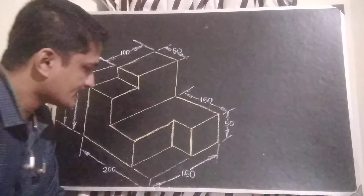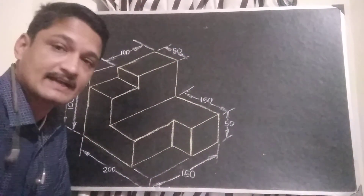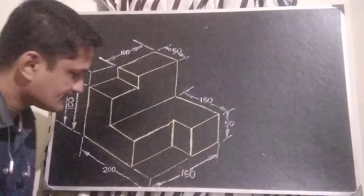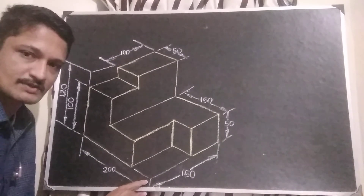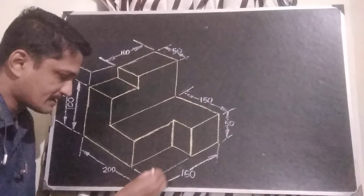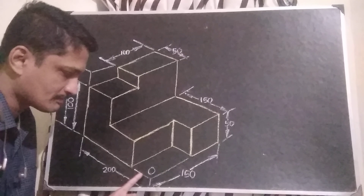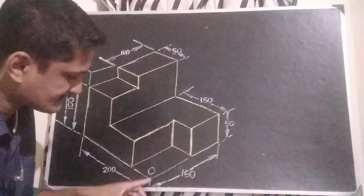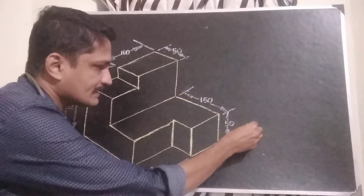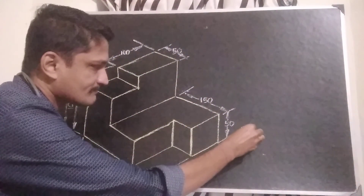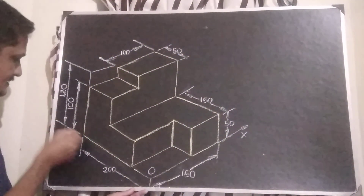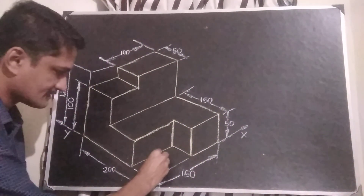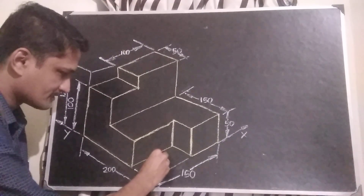Here, we can draw the isometric axis in this isometric figure. This lowermost corner will become the origin. This axis must be the x-axis — isometric x-axis — and this will be the isometric y-axis, and this will be the isometric z-axis.